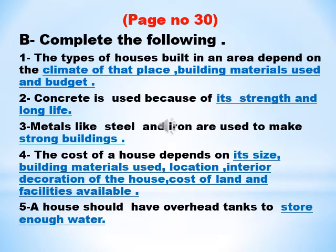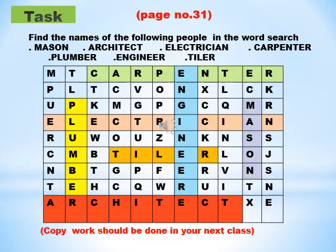Number five: a house should have overhead tanks to store enough water. Our next task is on page number 31. Find the names of the following people in the word search: mason, architect, electrician, carpenter, plumber, engineer, tiler. You have to circle or color the correct answer in the word search.